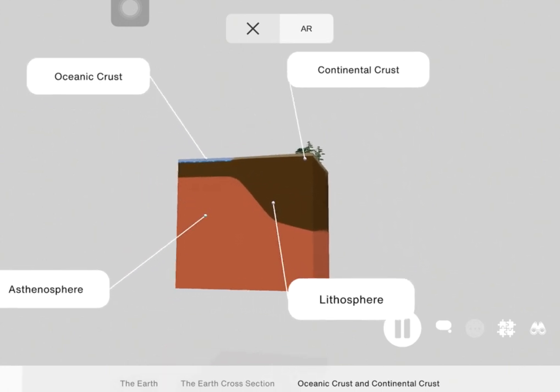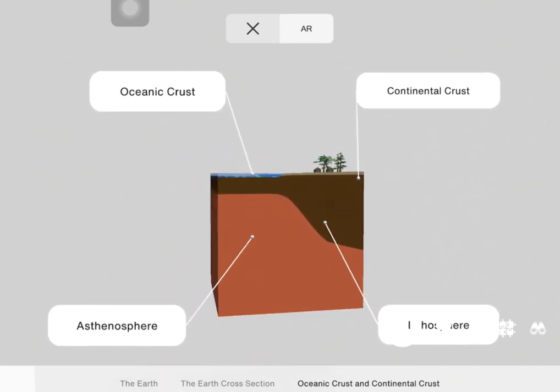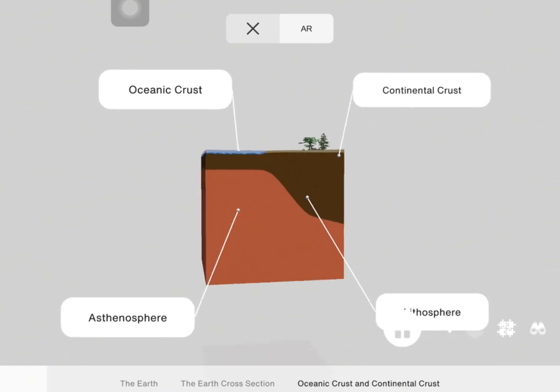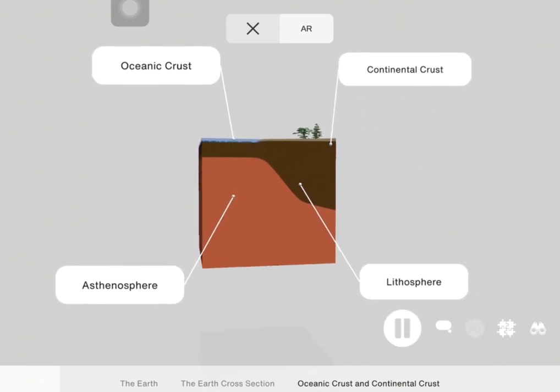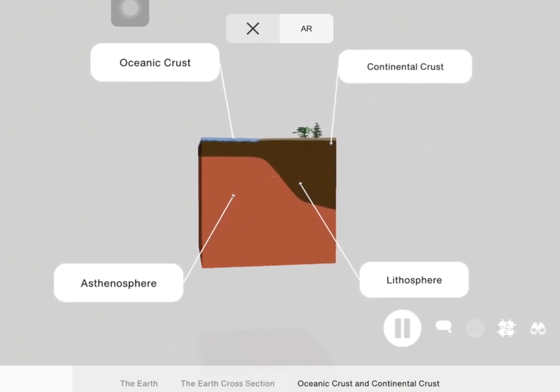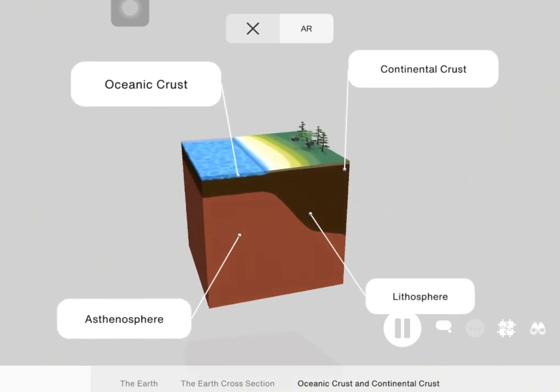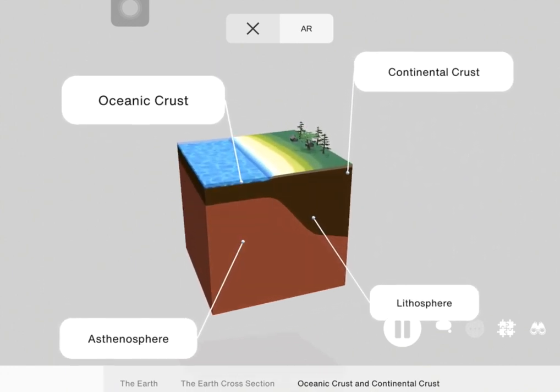Alright, so now let's talk about the oceanic crust, which is that part of the Earth's crust that covers the ocean basins. It consists of dark-colored rocks made up of basalt. This rock is made up of silicon, oxygen, and magnesium. The density of the oceanic crust is about 3 grams per cubic centimeter.